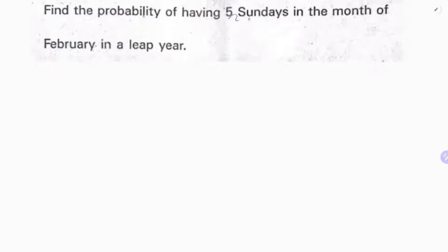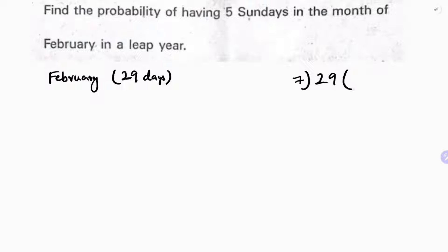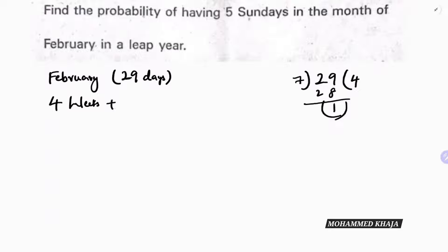Find the probability of having five Sundays in the month of February in a leap year. In a leap year, February has 29 days. Dividing by 7 — since there are seven days in a week — 7 times 4 is 28, so we get four complete weeks plus one extra day.